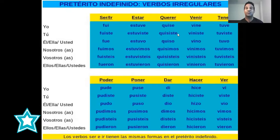Querer, to want. Yo quise, tú quisiste, él quiso, nosotros quisimos, vosotros quisisteis, ellos quisieron. Venir, to come. Yo vine, tú viniste, él vino, nosotros vinimos, vosotros vinisteis, ellos vinieron.